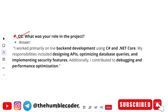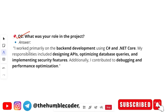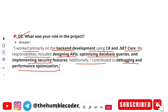The next question is: 'What was your role in the project?' In college, most people make projects in groups. If it is a team project, tell what your role was. If it's an individual project, you can say this project was completely made by me and I took care of all aspects. For a team project, a sample answer is: 'I worked primarily on back-end development using C# and .NET Core. My responsibilities included designing APIs, optimizing database queries, and implementing security features. I also contributed to debugging and performance optimization.'